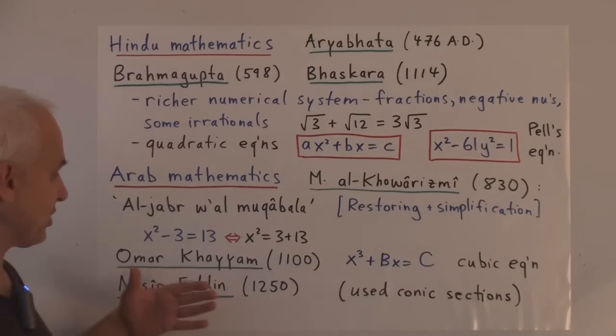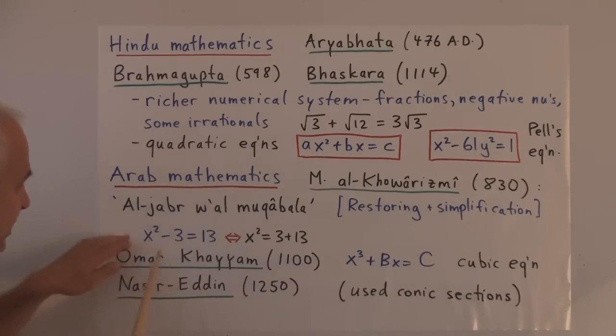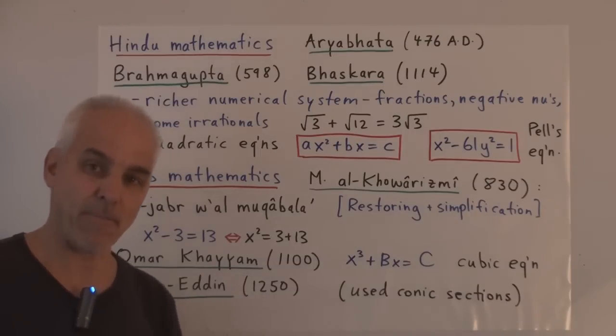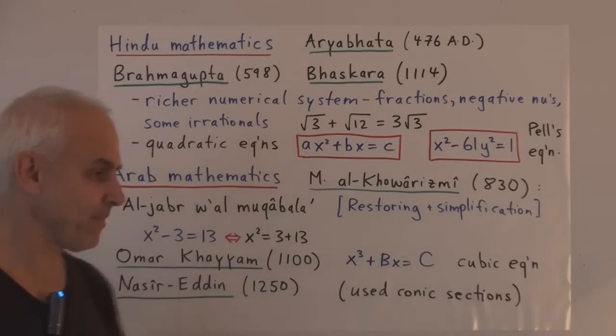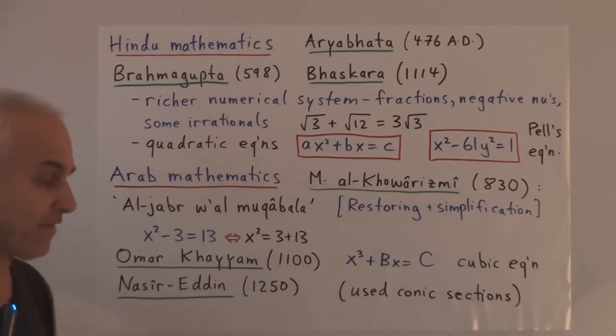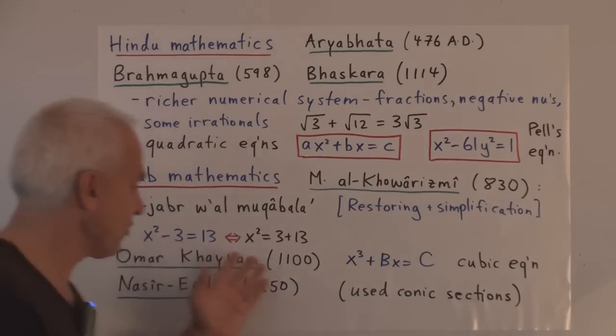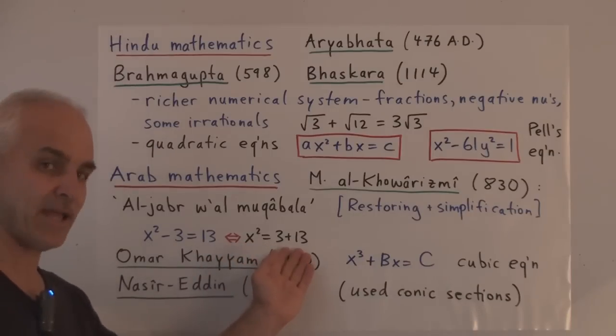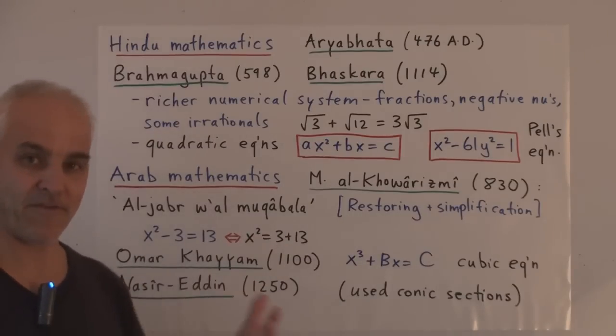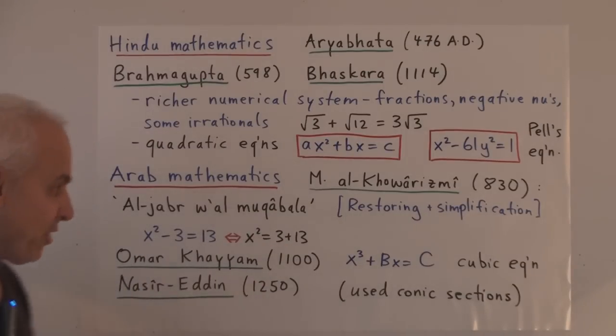So, the kinds of things that he was referring to with restoring is this process, say you have an equation x squared minus 3 equals 13, where x is an unknown number that you're trying to determine. Then what you can do is you can take the minus 3 away from the left-hand side and you can restore it by essentially taking it away from the right-hand side or adding it to the right-hand side. This is very typical kind of basic operation in algebra.